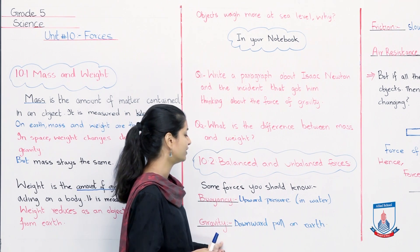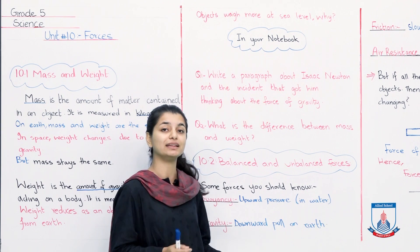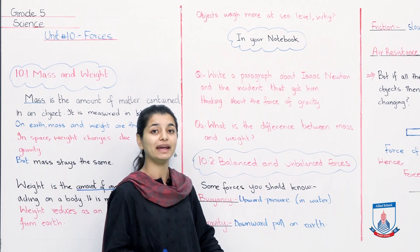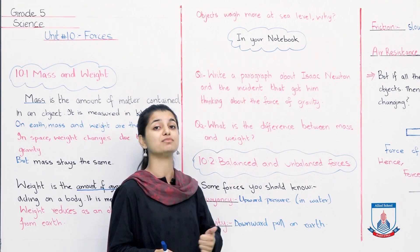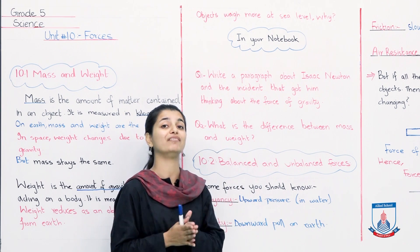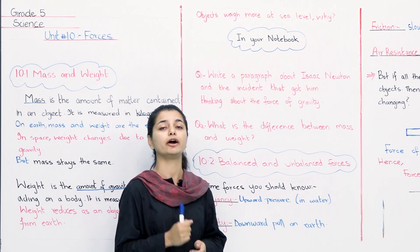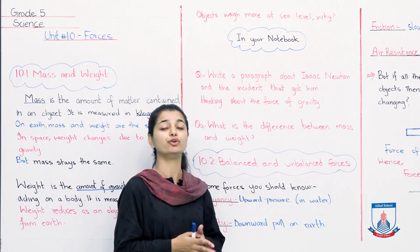The second force is gravity. And we have just talked about gravity. What is gravity? Downward pull on earth. So while buoyancy allows you to float on water, allows objects to float on water, what does gravity do? Instead, it pulls objects downwards. It pulls every object towards the earth. Let's go to the next board now.